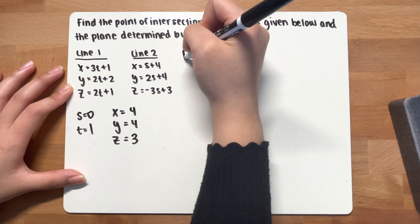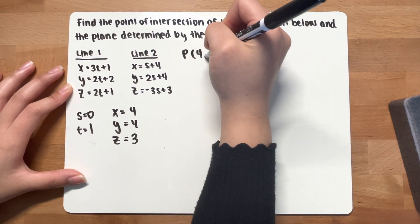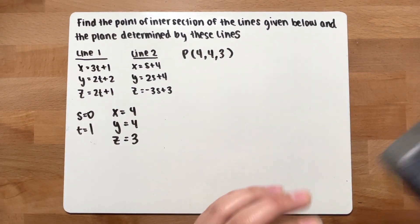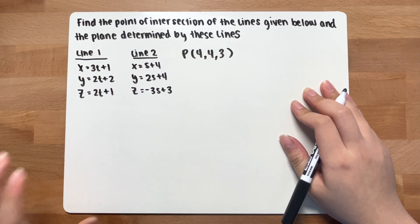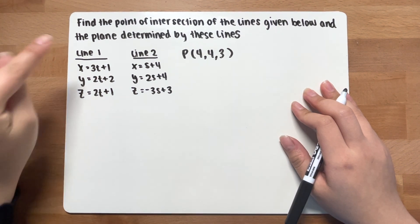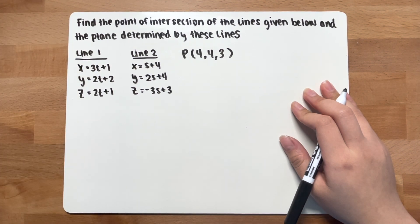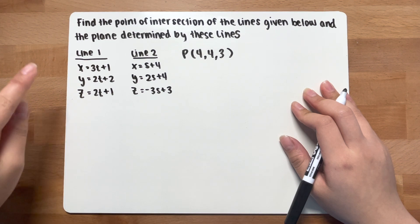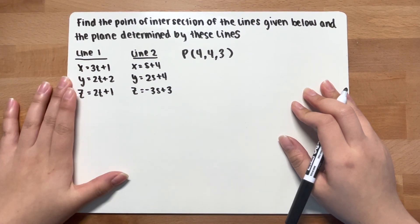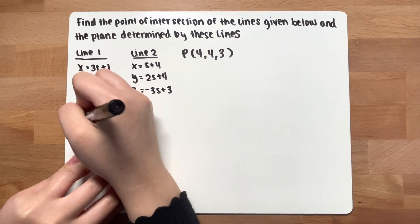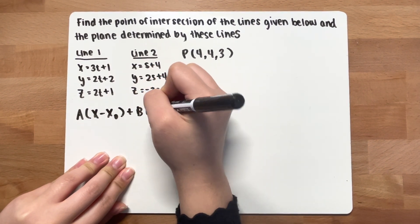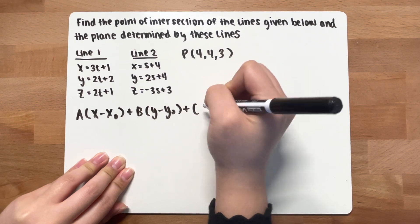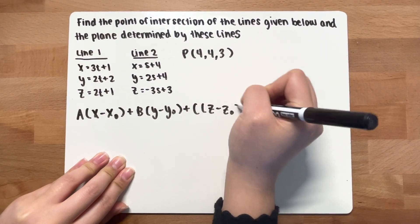So point P will be (4, 4, 3). Now you have solved the first section. Time for the second section, which is to find the plane determined by these lines. When you see plane, you need to use the equation of a plane: a(x - x₀) + b(y - y₀) + c(z - z₀) = 0.